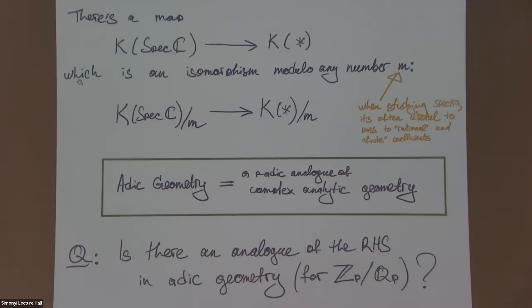This is an interesting question already if you just take X to be the spectrum of ℂ or just like one point. In fact, there is a comparison map in this case. You can go from the algebraic K-theory of Spec ℂ to the topological K-theory of just one point. This is a map of spectra. When people work with spectra, they talk about passing to rational coefficients and finite coefficients. You can ask, what happens when you pass to finite coefficients?